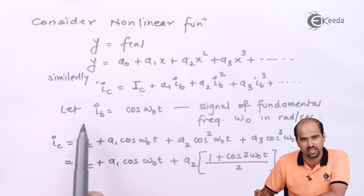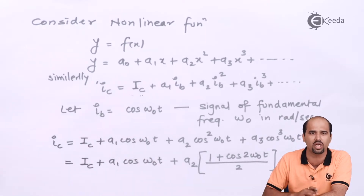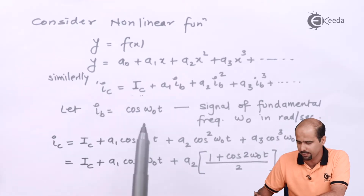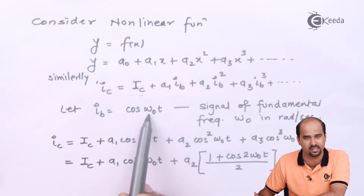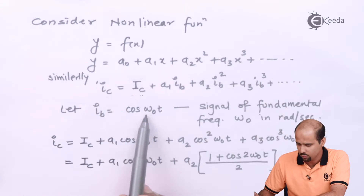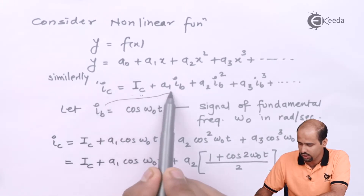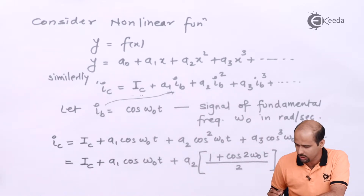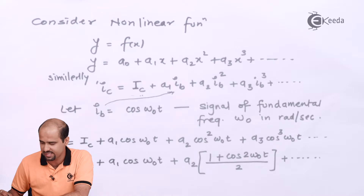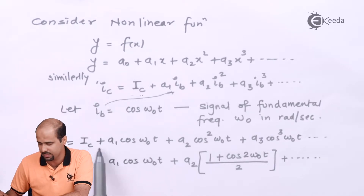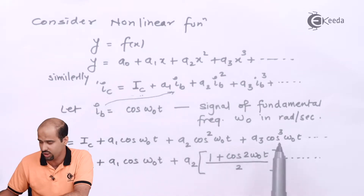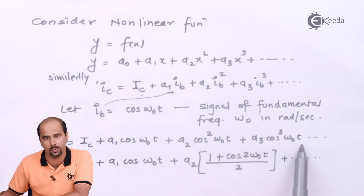If I consider the sinusoidal nature of IB — since the input to a power amplifier is a sinusoidal signal with reference frequency omega-0 in radians per second — then I substitute this into all expressions for IB, IB², IB³ and so on. The resulting IC expression becomes: IC plus A1·cos(ω₀t) plus A2·cos²(ω₀t) plus A3·cos³(ω₀t).